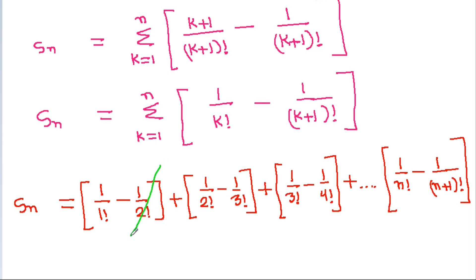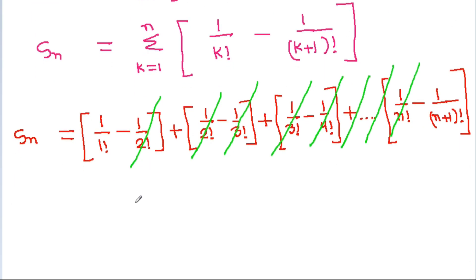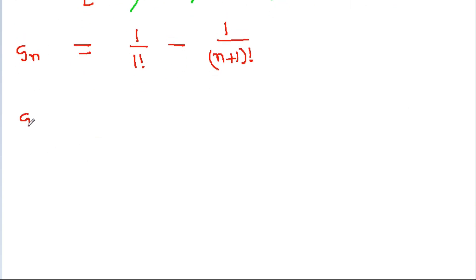The intermediate terms cancel — 1/2!, 1/3!, 1/4!, all the way to 1/n! get cancelled. So Sn equals 1/1! minus 1/(n+1)!, which simplifies to 1 minus 1/(n+1)!.